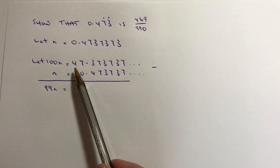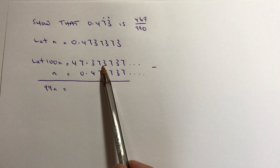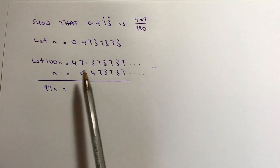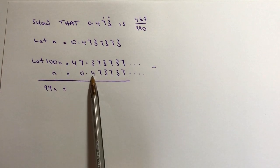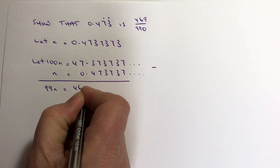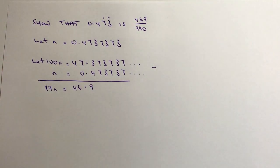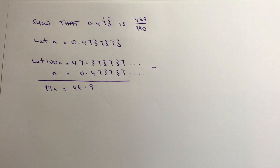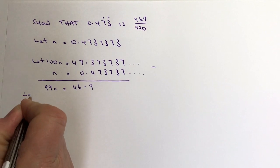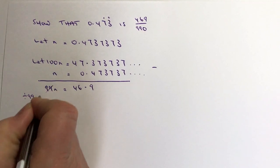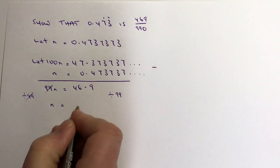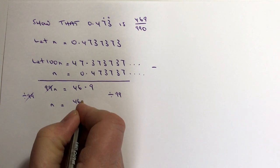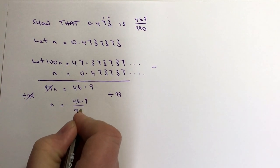If I look at this number, I've got 47.3 and all the recurring, take away 0.4 and all the recurring. So it's actually 47.3 take away 0.4, and that's going to give me 46.9. So I've got a value of 99n, and if I then divide through by 99, I get n on this side, and then 46.9 divided by 99.